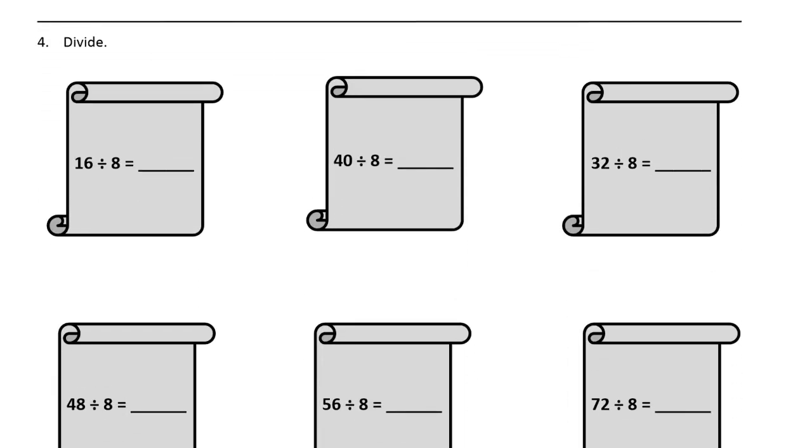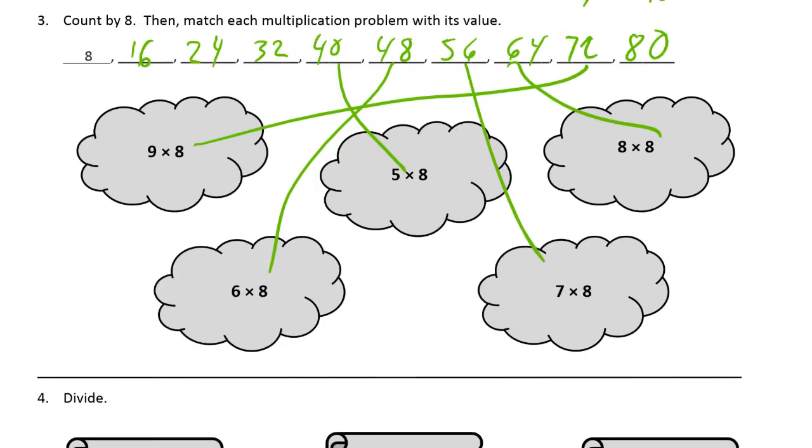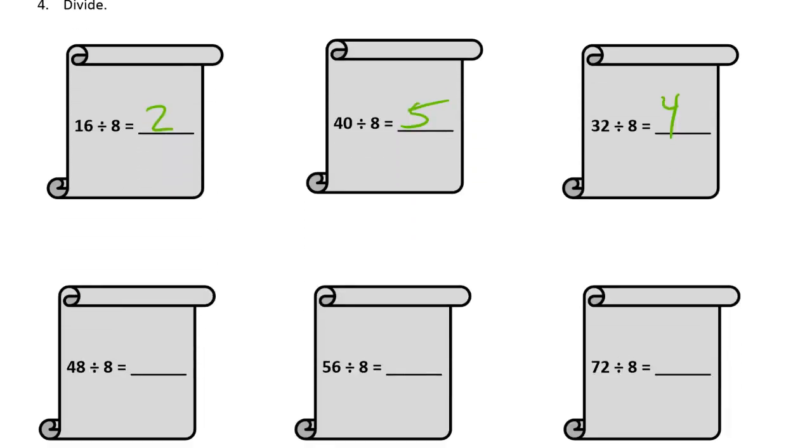And now we're dividing. 16 divided by 8. How many 8s does it take to make 16? It's 2 8s. 40 is 5 8s. And once you have them all written, they have all the 8s written down like you do at the top of the page now, you can just count. 32 is how many 8s? It's 4 8s. Just like that. That's all it is for division. How many 8s makes 48? It takes 6 8s. And 56, that's 7. And 72, that's 9.